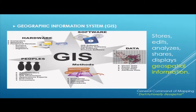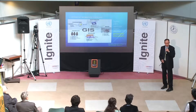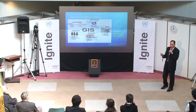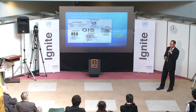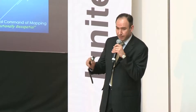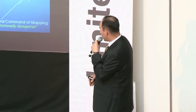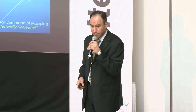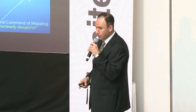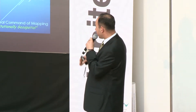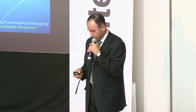A typical geographic information system is a system which stores, edits, analyzes, shares, and displays geographic information. A typical GIS consists of five major components: hardware, software, data, people, and methods. In this presentation, we will discuss all five of these components.